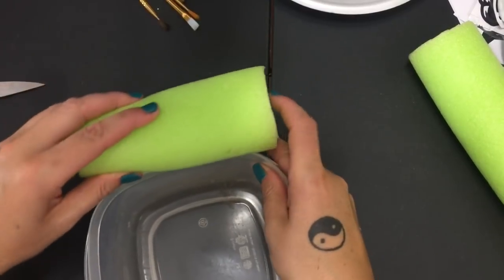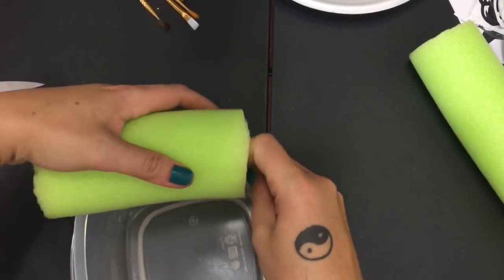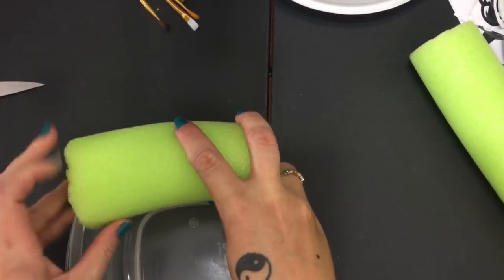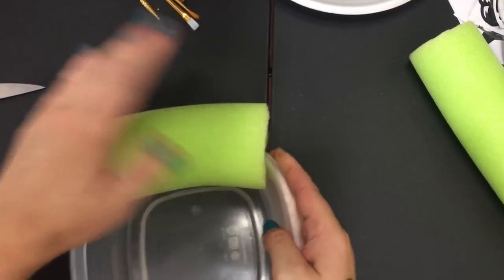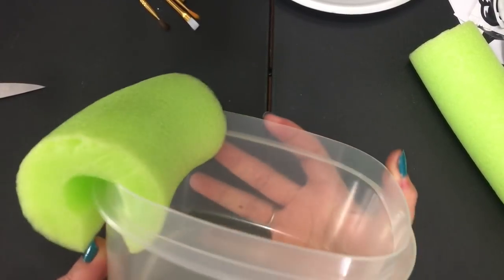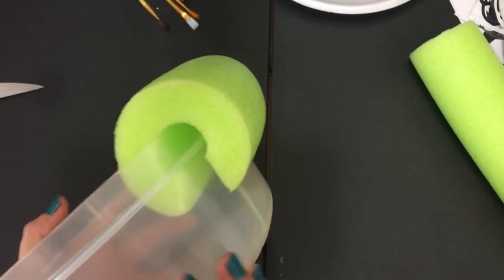Now you're going to take this and clamp it down onto the side of your bowl just like that.